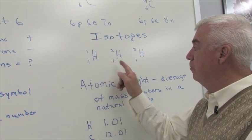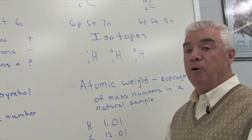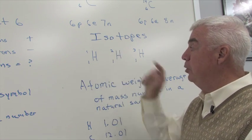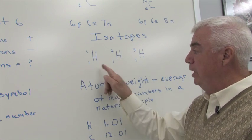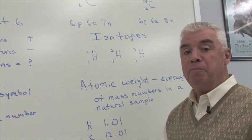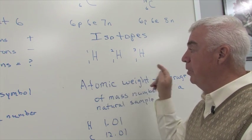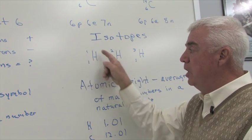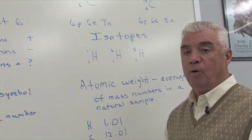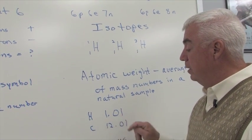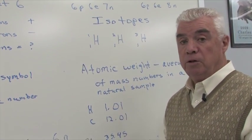But we don't have equal amounts of these in nature. And so when they measure the atomic weight and come up with an average mass number, there's a lot more of this hydrogen one over here. And the atomic weight that's reported is 1.01 atomic mass units, they're called.